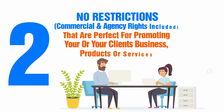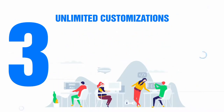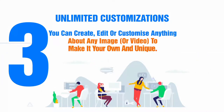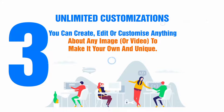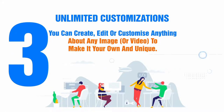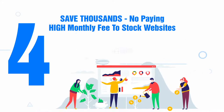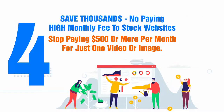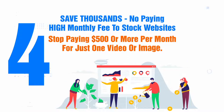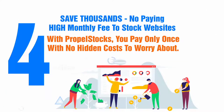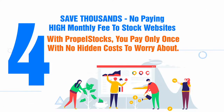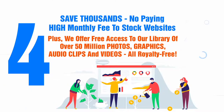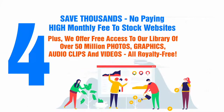Products or services. Three: unlimited customizations. With our premium one-click image, video and music editors, you can create, edit or customize anything about any image or video to make it your own and unique. Four: save thousands. No paying high monthly fees to stock websites. Stop paying $500 or more per month for just one video or image. With Propelstock, you pay only once with no hidden costs to worry about, plus free access to our library of over 10 billion photos, graphics, audio clips and videos — all royalty-free.